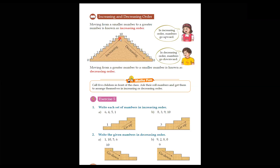And what happened here? Decrease — it means decrease. So look: 10, 9 — it has decreased, then 8, 7, 6, 5, 4, 3, 2, 1, 0. The number decreased. Increasing and decreasing order.